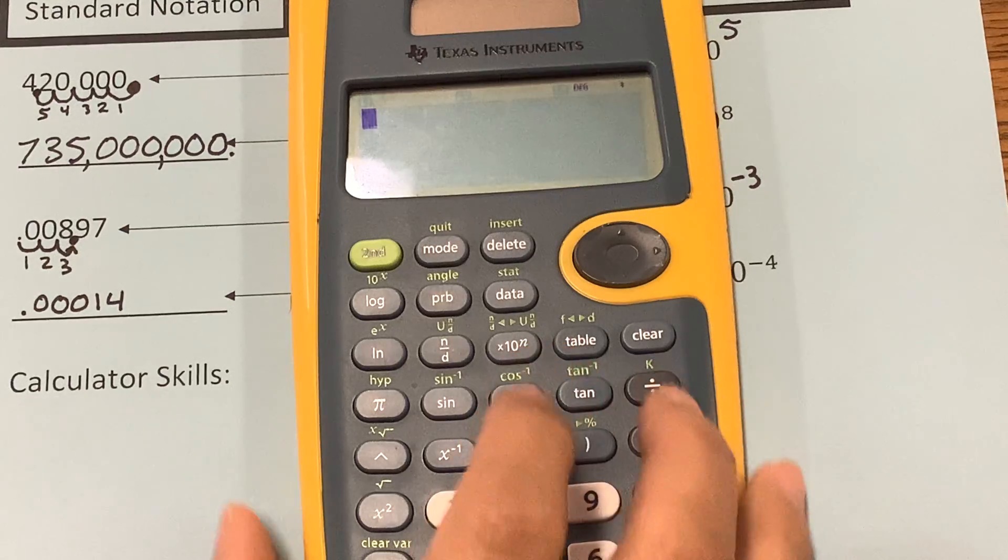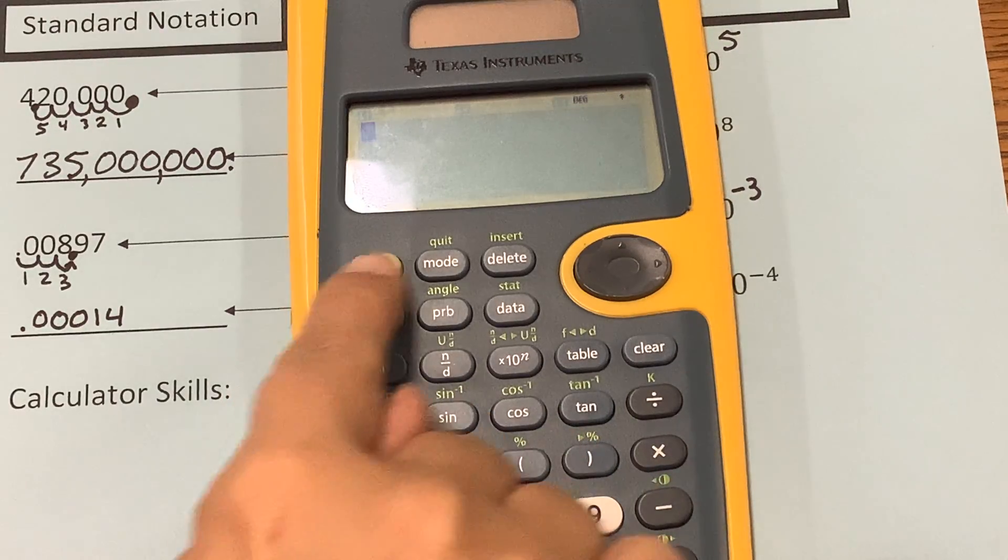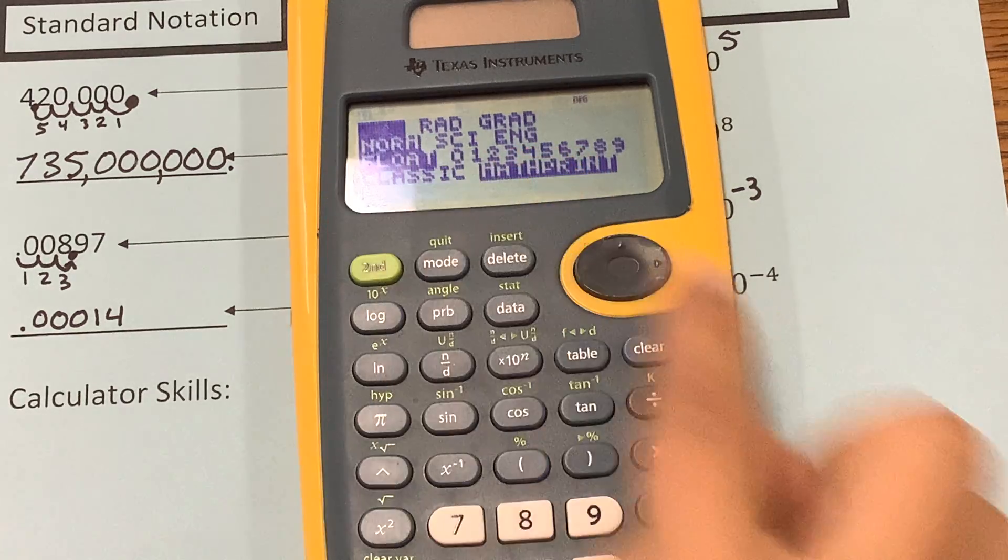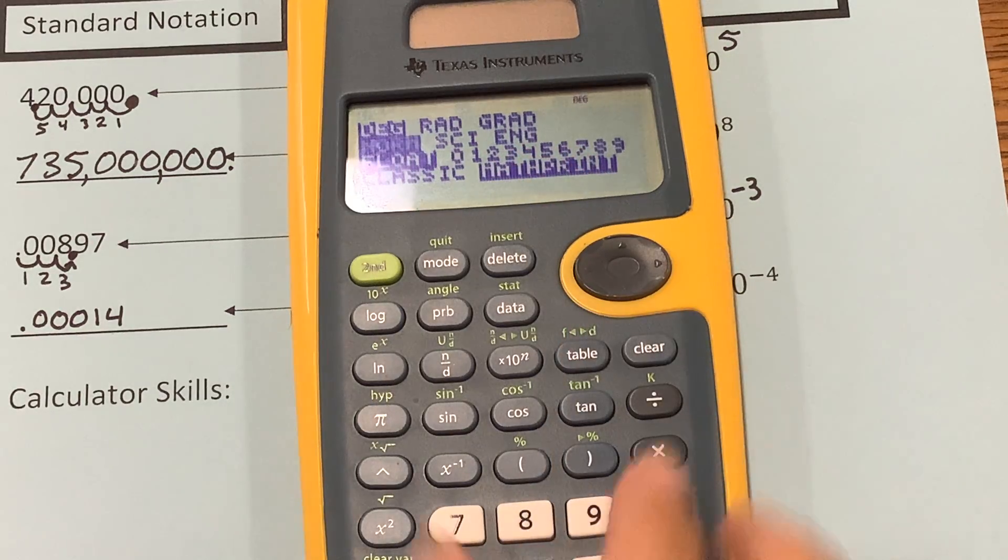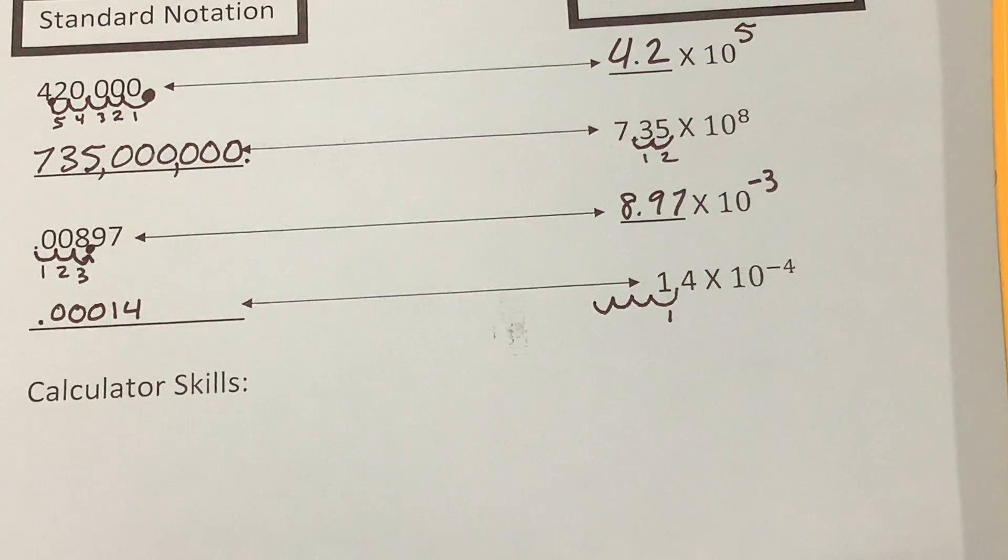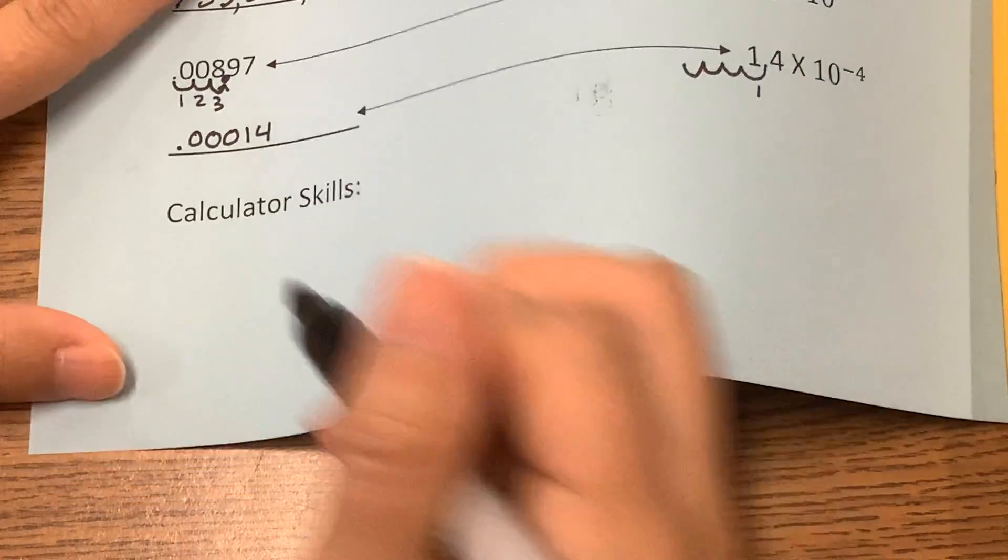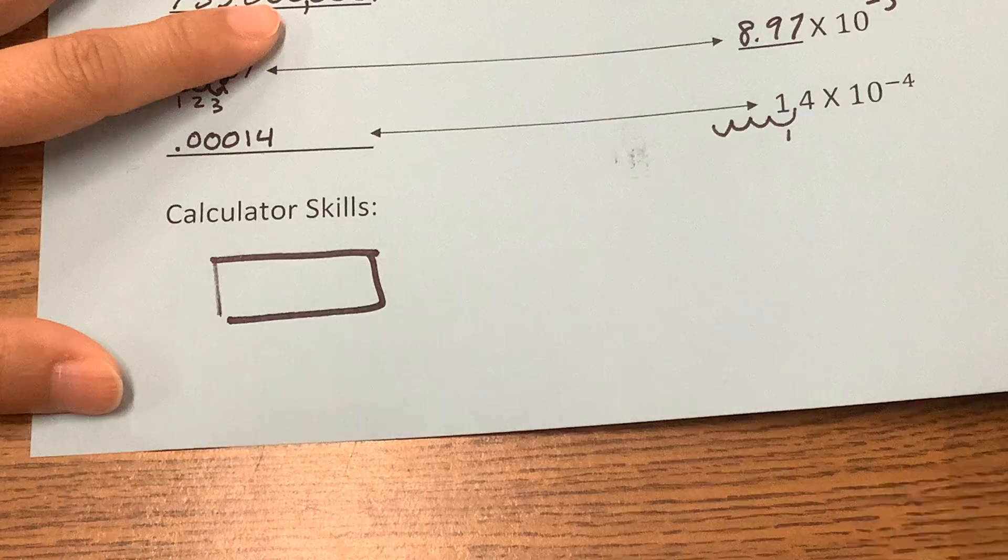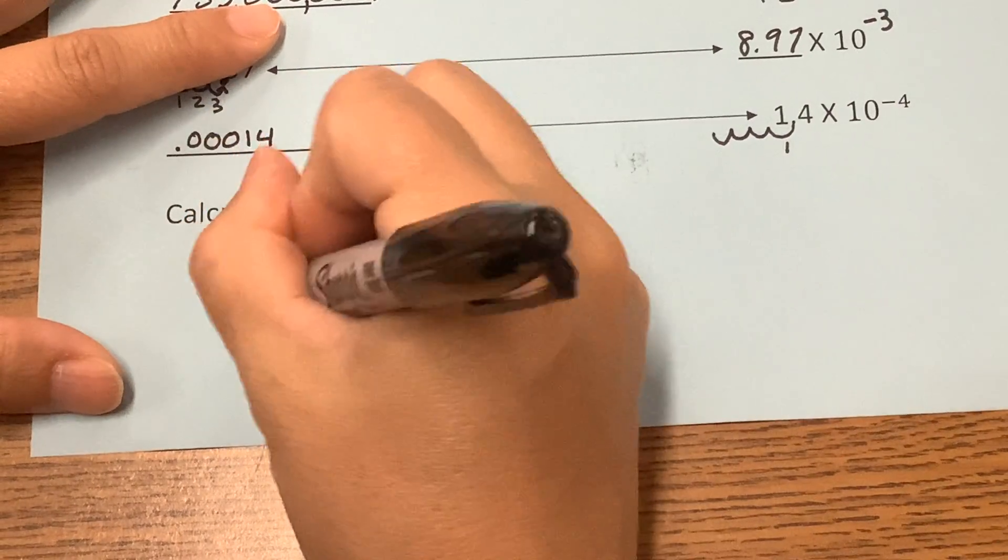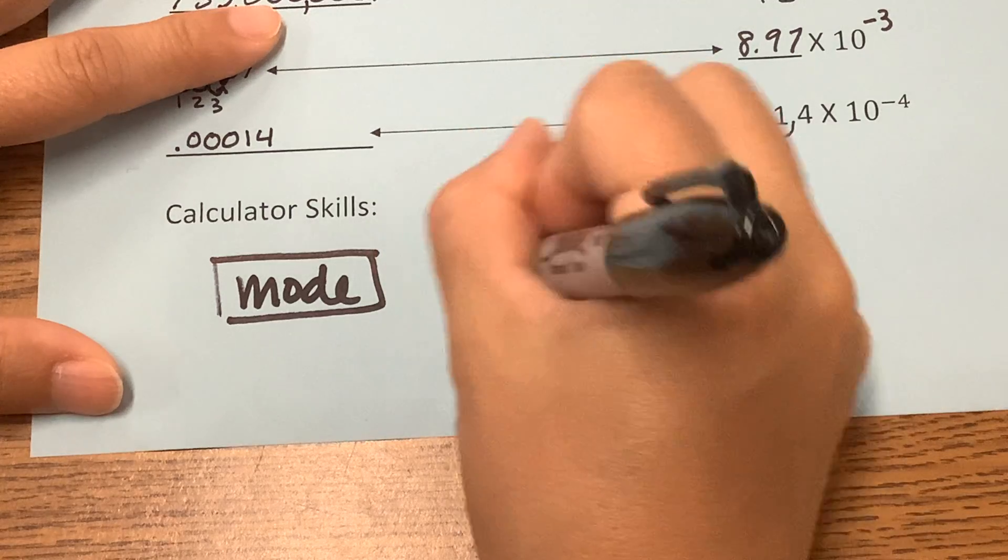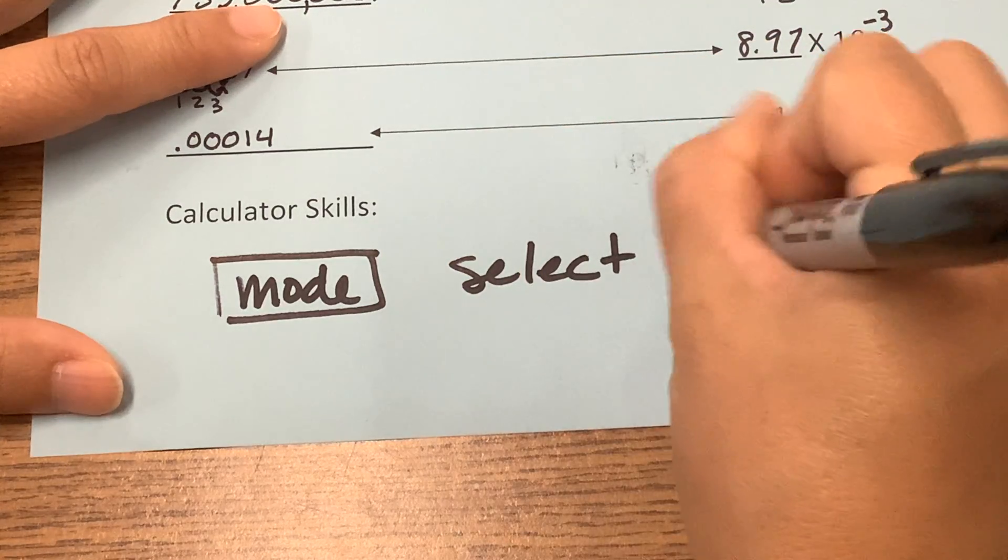Okay? So if you weren't sure how to get it out of scientific notation mode, go to mode. And just make sure that normal is highlighted. To highlight it, you press enter. And then just clear your calculator. And it will go away. So for calculator skills, the buttons that we use, we pressed that button that says mode. And then we selected SCI.